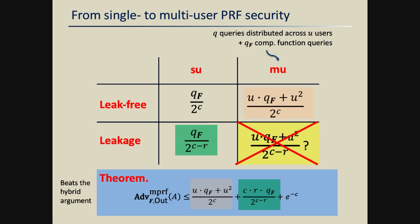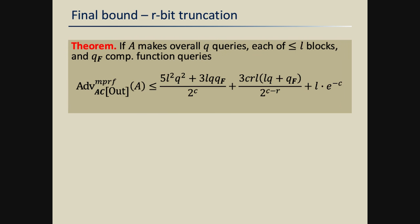We provide an analysis of the multi-user PRF security of a random compression function under leakage, and it turns out you can heavily beat the hybrid argument by proving a bound directly. In particular, security only mildly decreases as you increase the number of users. The leading term in our advantage bound is very similar — up to a multiplicative factor that is not excessively large — to the single-user bound. There is another term that is by far not the leading term, which matches the leak-free case. This is tight.